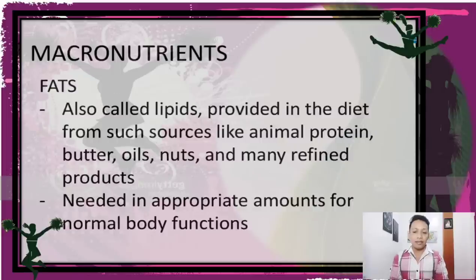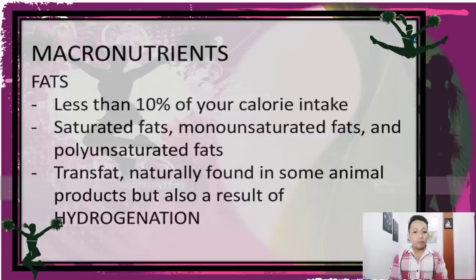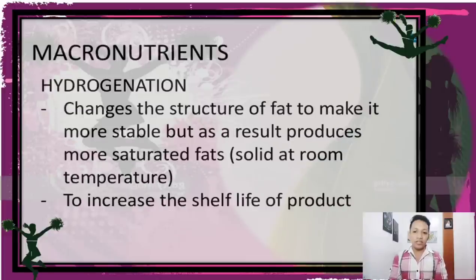Fats, also called lipids, are provided from sources like animal protein, butter, oils, nuts, and many refined products. They are needed in appropriate amounts for normal body functions, and should be less than 10% of your calorie intake. Types include saturated fats, monounsaturated fats, and polyunsaturated fats. Trans fat is naturally found in some animal products but also results from hydrogenation, which changes fat structure to make it more stable, producing more saturated fats that are solid at room temperature to increase a product's shelf life.